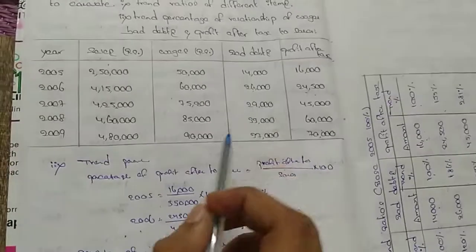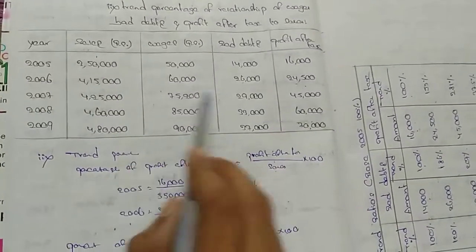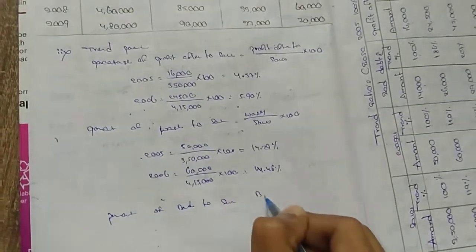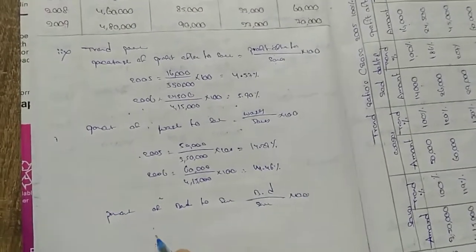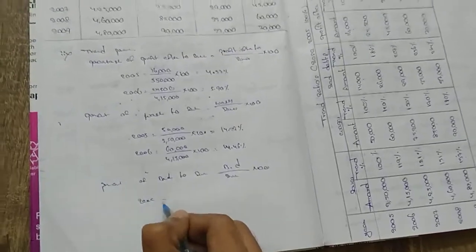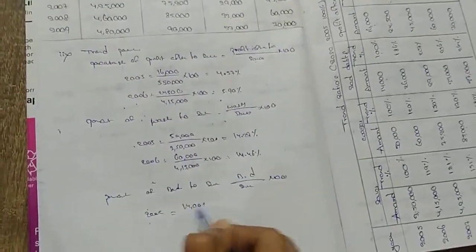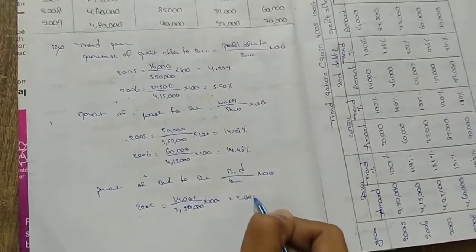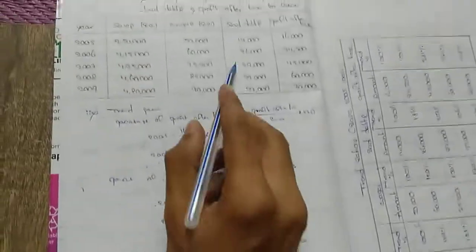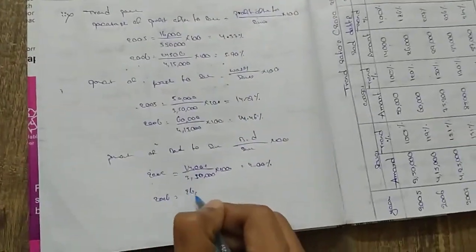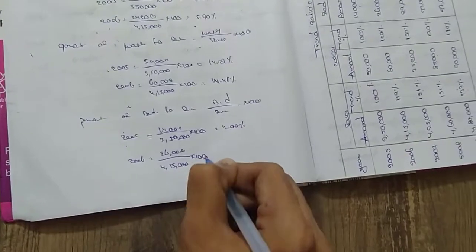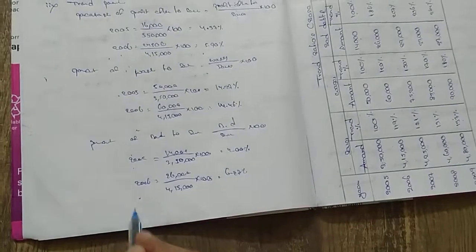For percentage of bad debts to sales: formula is bad debts divided by sales into 100. For 2005: 14,000 divided by 3 lakhs 50,000 into 100 = 4.00%. For 2006: 26,000 divided by 4 lakhs 15,000 into 100 = 6.27%. The same calculation continues for years 2007, 2008, and 2009.